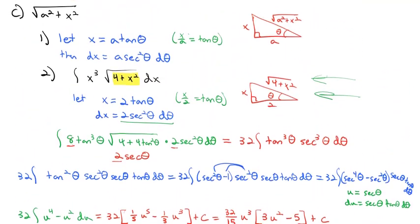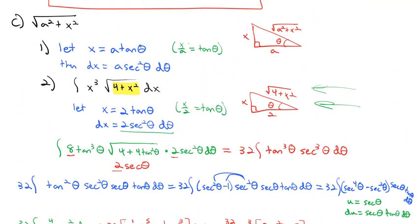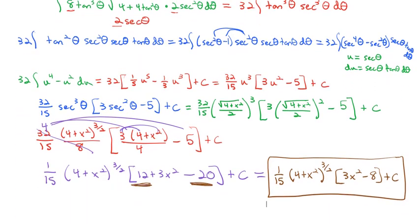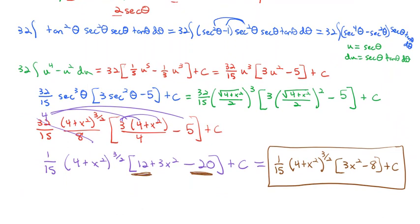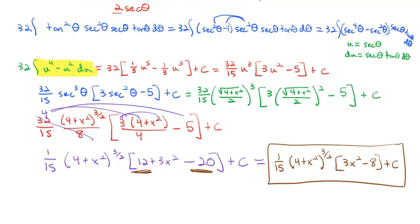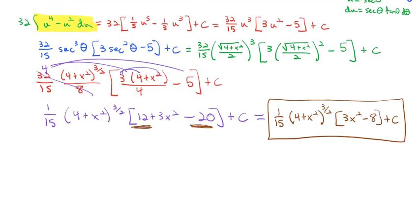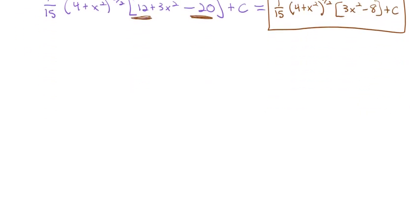Combining the like terms, 12 minus 20 gives negative 8, and our final antiderivative is one-fifteenth times 4 plus x squared to the three-halves times the quantity 3x squared minus 8, plus C. The only actual integral we took was u to the fourth minus u squared — a very easy integral made possible by trig substitution.